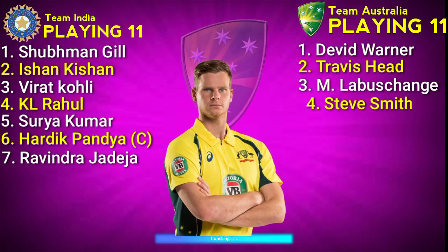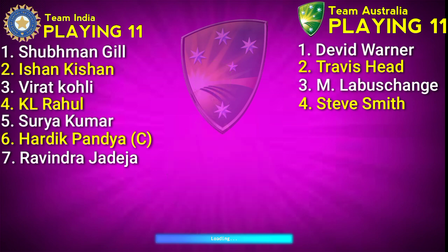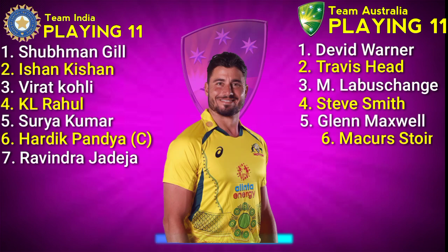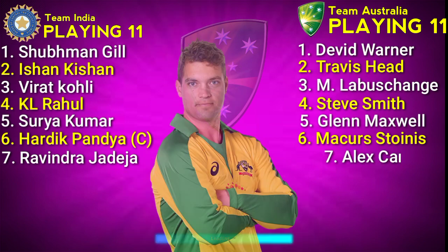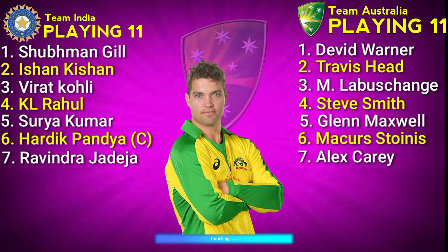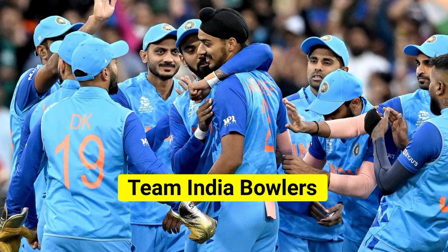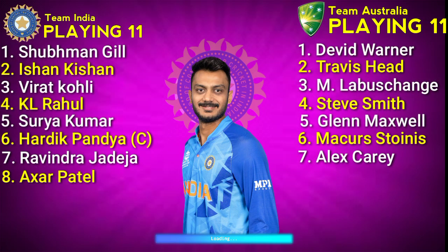Team Australia middle order: No.3 Marnus Labuschagne, Right Hand Batsman. No.4 Steve Smith, Right Hand Batsman. No.5 Glenn Maxwell, Right Hand All-Rounder. No.6 Marcus Stoinis, Right Hand All-Rounder. No.7 Alex Carey, Left Hand Batsman.